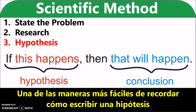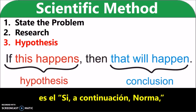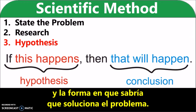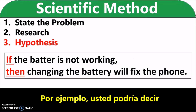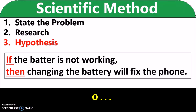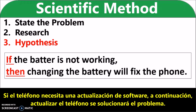One of the easiest ways to remember how to write a hypothesis is the if-then statement, which makes a relationship between the possible solution and the way that you would know that it fixes the problem. For example, you could say that if the battery is not functioning, then changing the battery will fix the phone. Or, if the phone needs a software update, then updating the phone will fix the problem.